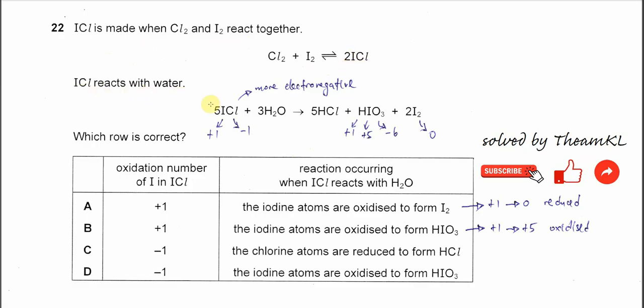ICL reacts with water and it will form three products: HCl, HIO3, and iodine. Which row is correct?